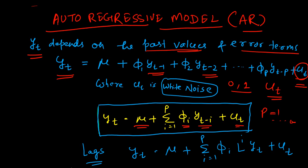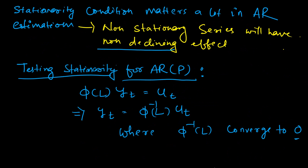We can also use the lag operator, introduced in the previous video. Yt can be written as the constant plus the summation from i equal to 1 to p of theta i, and then using the lag operator we write L to the power i times Yt. As i changes, the lag changes, producing terms Yt minus 1, Yt minus 2, and so on. That is how we represent the AR model using the lag operators, which will help us find important properties of the AR series.